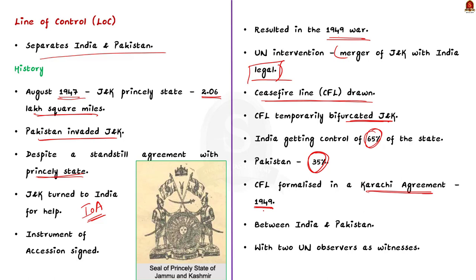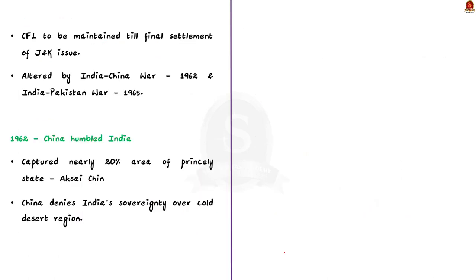The Karachi Agreement was signed between India and Pakistan with two UN observers signing as witnesses. The sanctity of the ceasefire line was to be maintained till the final settlement of the Jammu and Kashmir issue. However, two incidents altered the status quo on Jammu and Kashmir during the 1960s: the India-China war of 1962 and the India-Pakistan war of 1965.